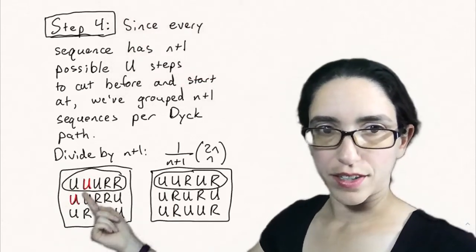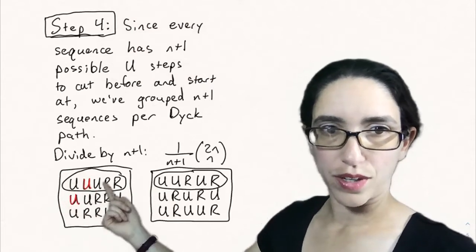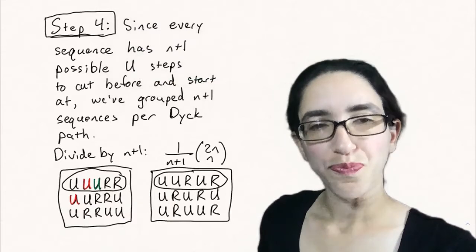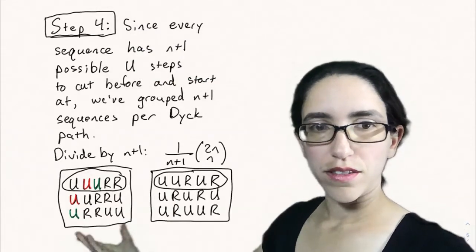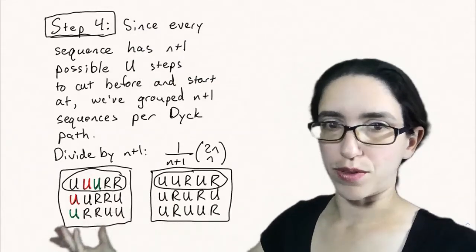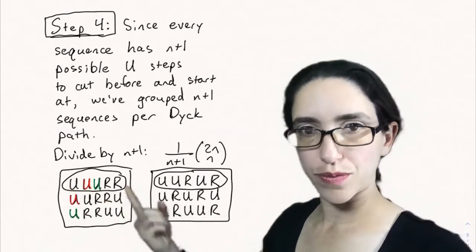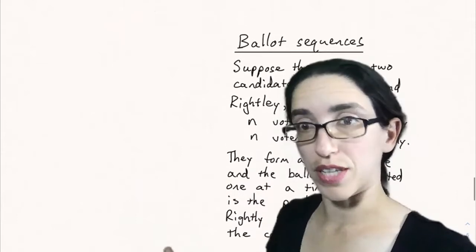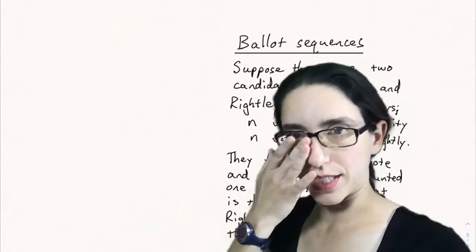Each of these have three elements because there are three U's. And so that's how we sorted our 2n choose n things into groups of size n plus 1 that correspond to the Dyck paths.